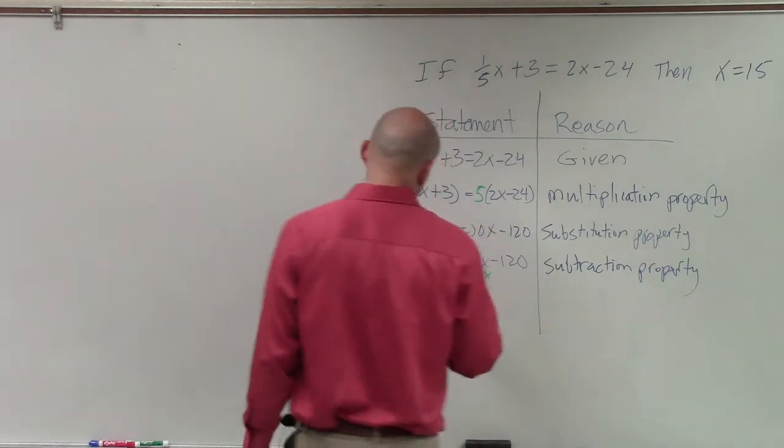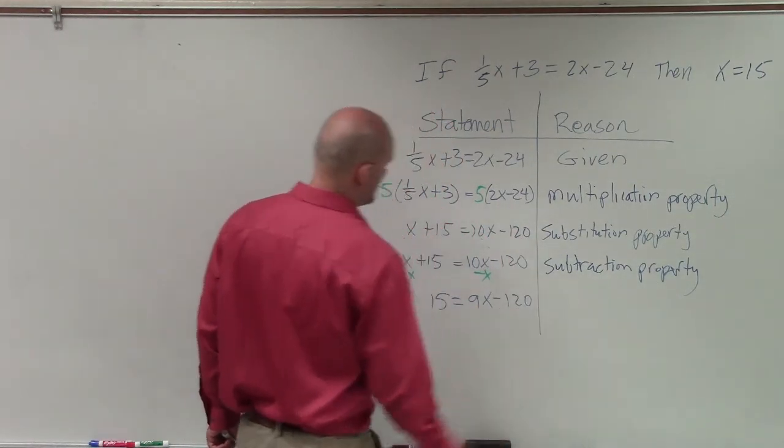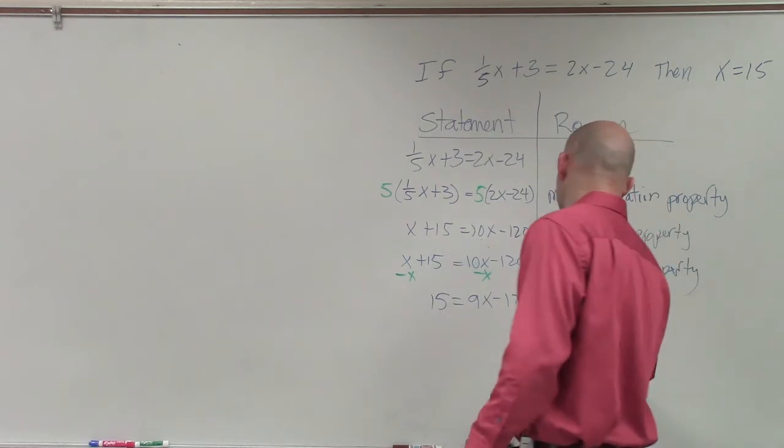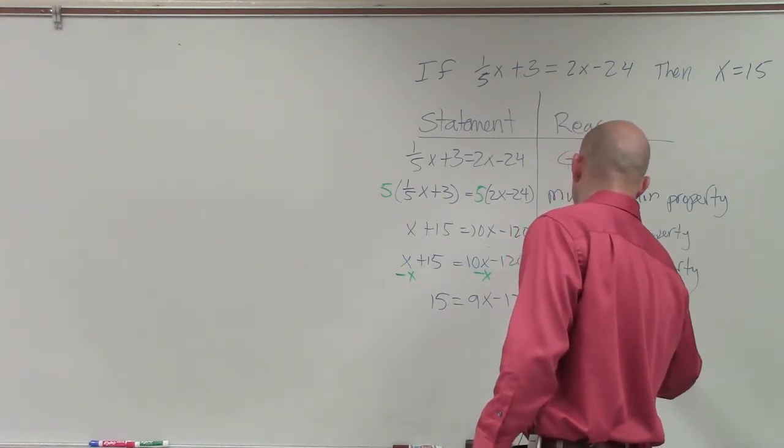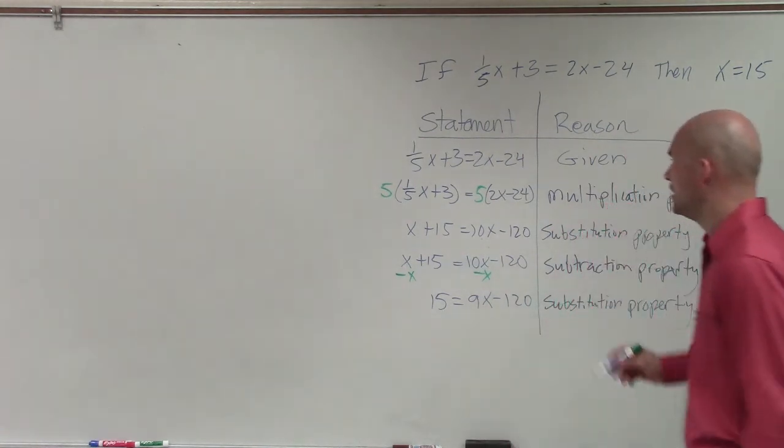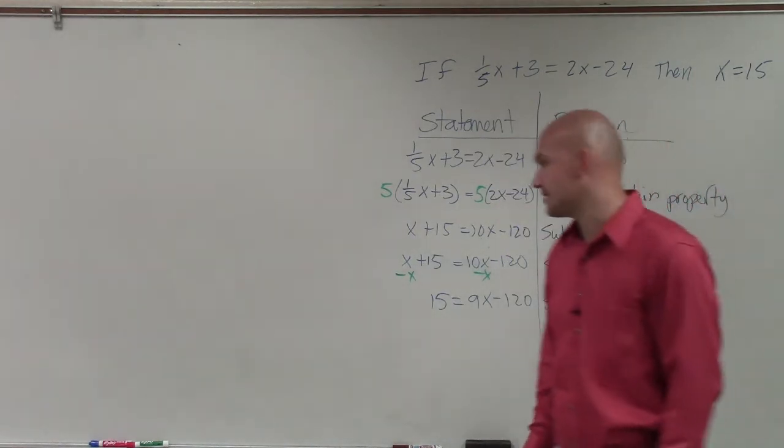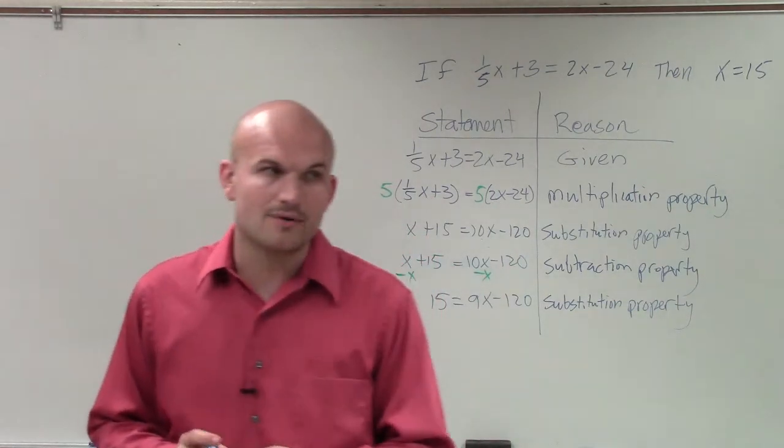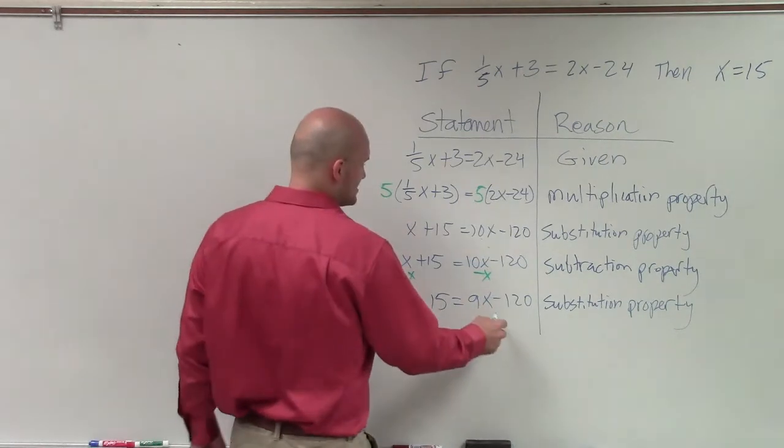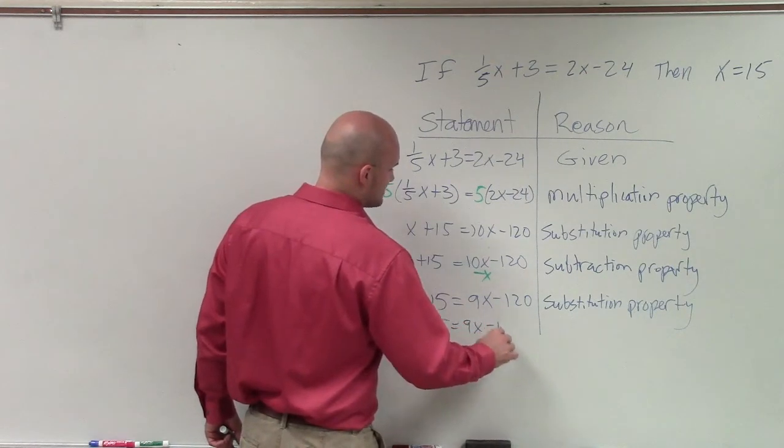Subtraction property. So now I have 15 equals 9x minus 120. And therefore, that's again going to be the substitution. Where did you get 9x? 10x minus x. So the 1 in front of the x? Yep. It's just like having a 1 in front of the x. So now I need to get the 120 over here. So what I can do is add 120 to both sides.